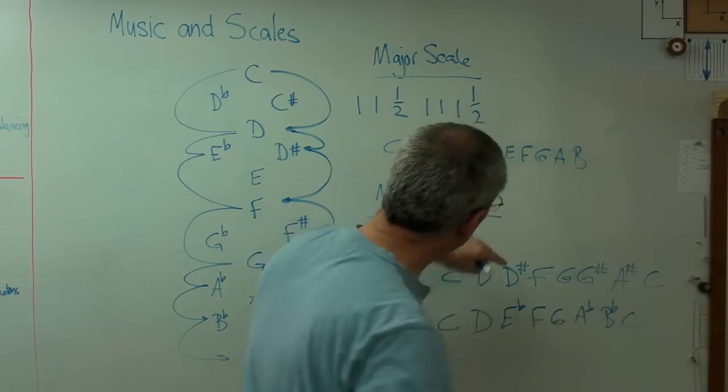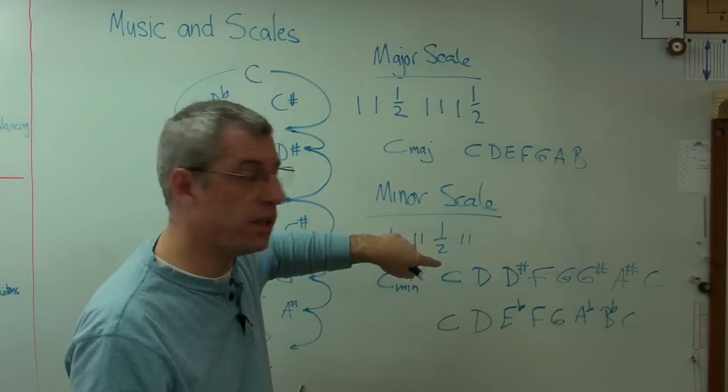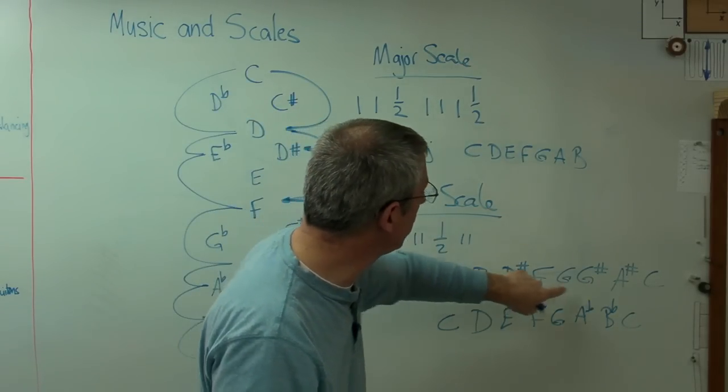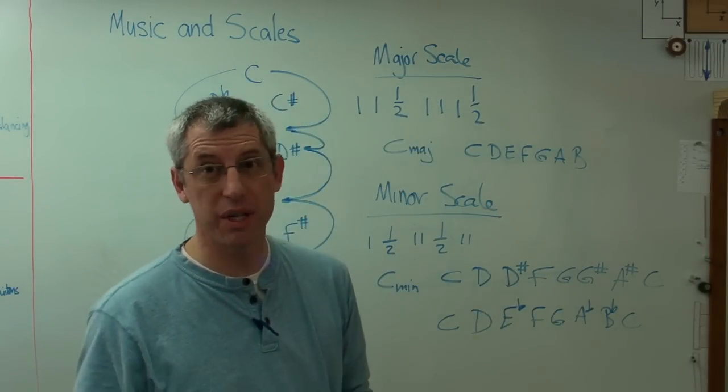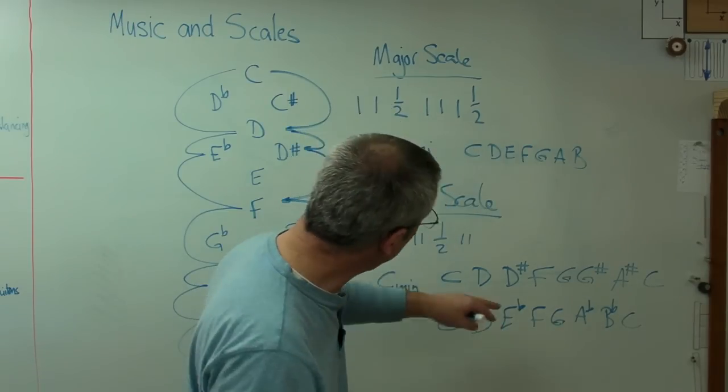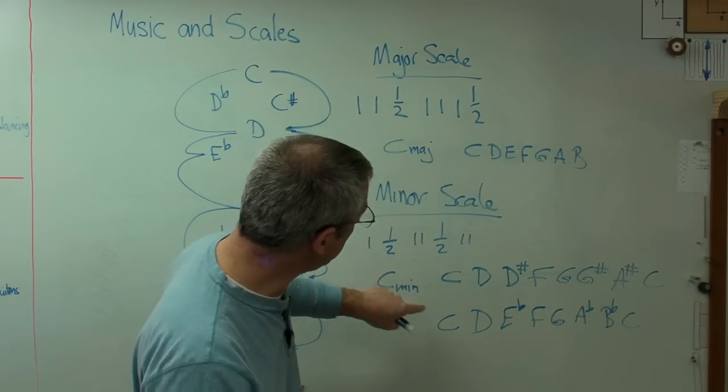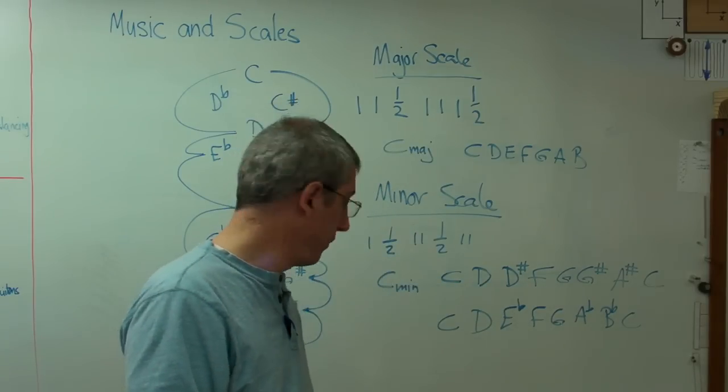The rule is that no note, no letter can appear more than once in the sequence. D appears more than once and G appears more than once. That's breaking the rule. But now I've got C, D, E, F, G, A, B, C. Perfect. And now I've just got some flats in there. So if you write out the key of C minor, that's what it looks like.